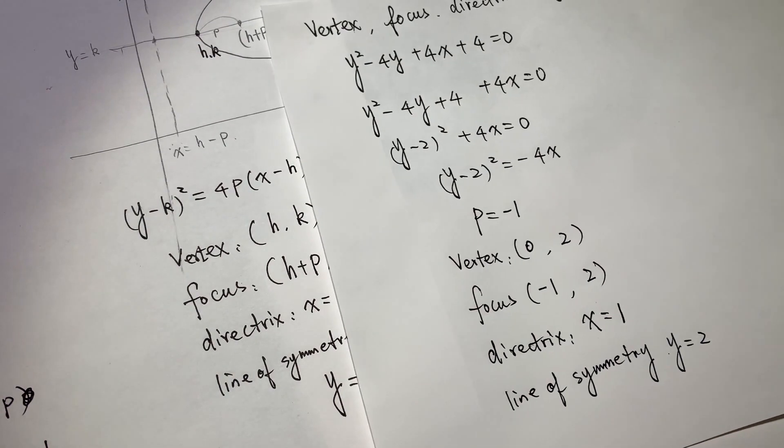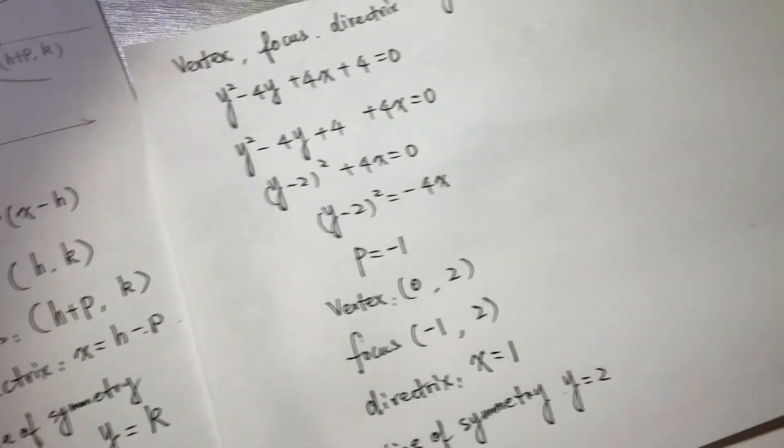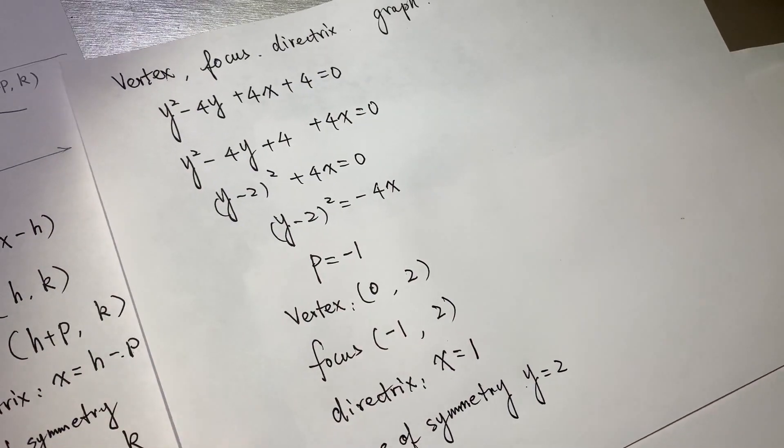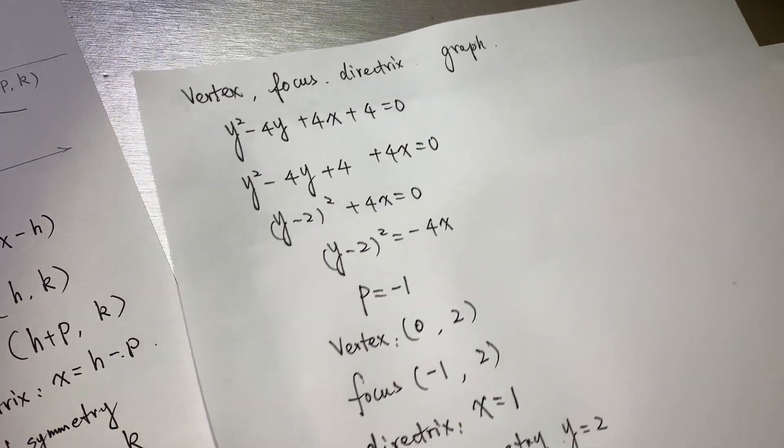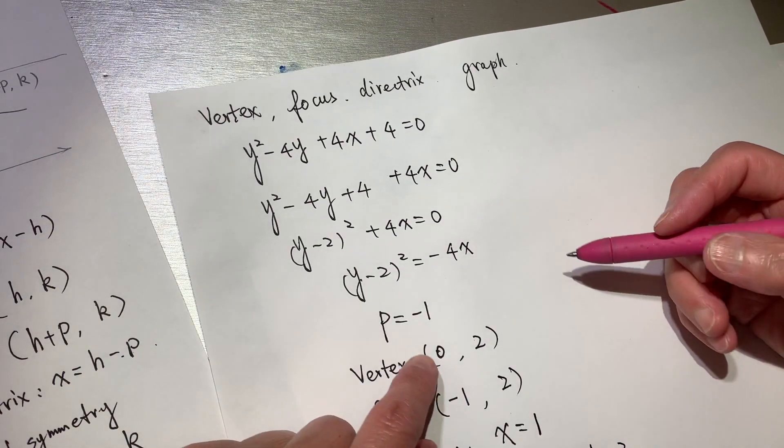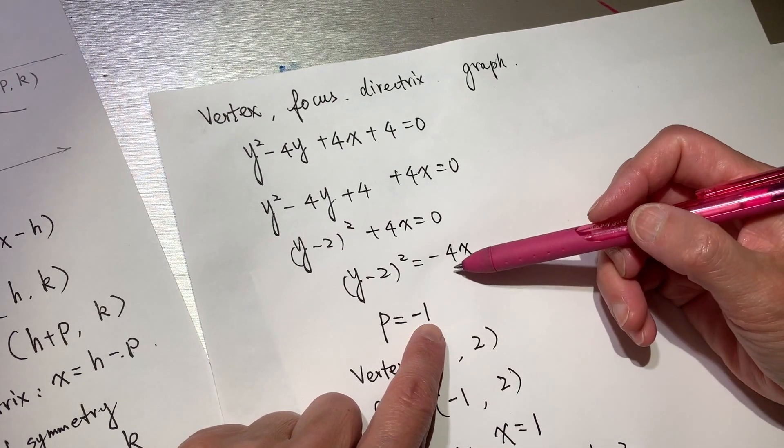With all these values, now we can draw the graph. We know p is negative, so the graph will open to the opposite side.